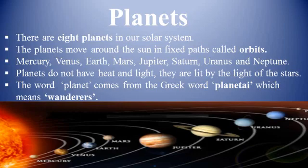Planets: after the sun, the largest celestial bodies in the solar system are the planets. There are eight planets in our solar system. The planets move around the sun in fixed paths called orbits. All planets have two motions — revolution and rotation. Revolution means these planets are revolving around the sun, and they also rotate or spin around their axis. In order of their distances from the sun, they are Mercury, Venus, Earth, Mars, Jupiter, Saturn, Uranus, and Neptune.